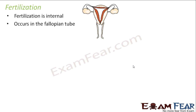This process takes place inside the body of the female, specifically in the fallopian tube. By the process of ovulation, a matured egg is released and it remains in the fallopian tube. The sperms are produced and ejaculated into the vagina of the female, and they also travel from the vagina to the fallopian tube, where the actual fusion takes place.